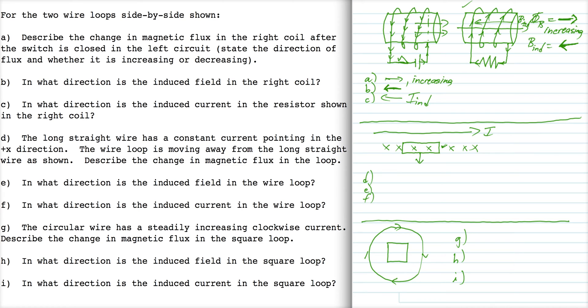The magnetic field of a wire depends on mu naught I over 2 pi r. So as r increases, as this loop moves away, the magnetic field of the wire is going to decrease. The change in magnetic flux is that the magnetic flux is into the page but it is decreasing.